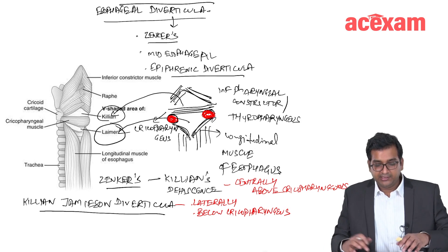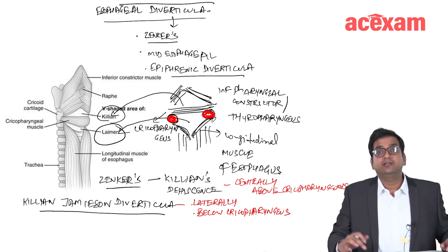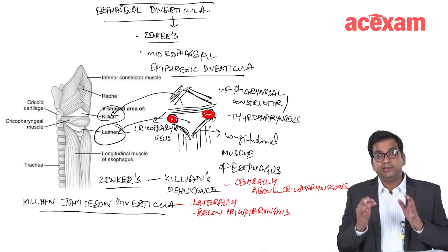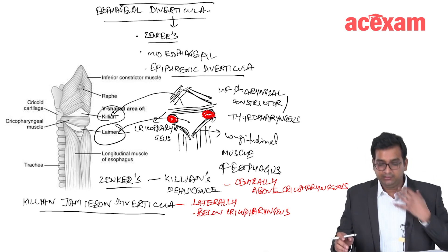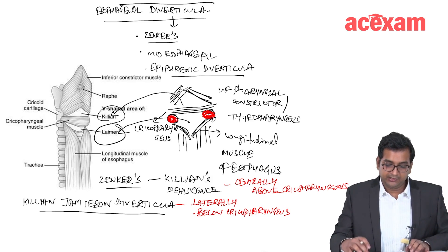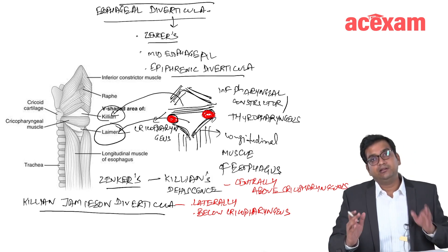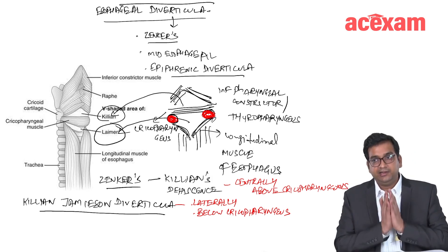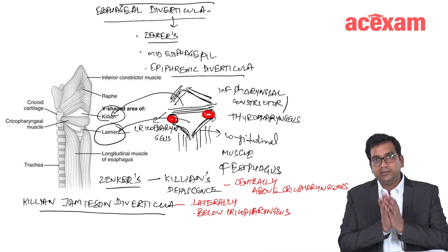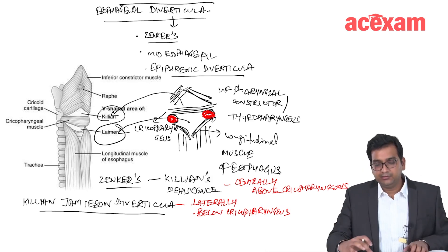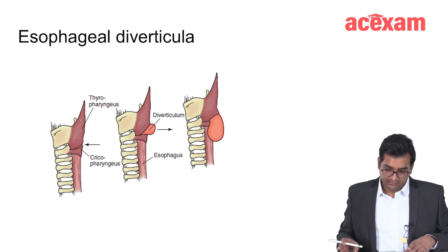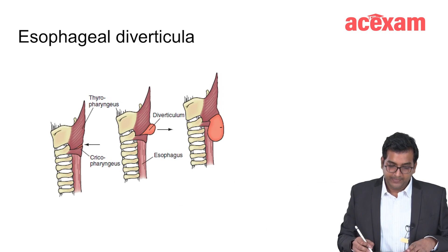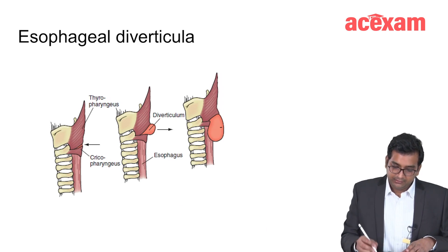Whenever Zenker's diverticulum becomes big, it goes laterally towards the left side, which is more common. So Zenker's diverticulum initially originates centrally, remains centrally, and whenever it becomes big it goes laterally towards the left side.